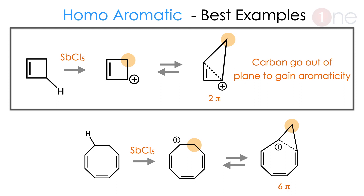The next one is the very rare type: homo-aromatic. The name itself suggests it is an established or artificially created aromaticity. In the cyclobutene system, if you use a strong acid, it pulls the hydrogen out and creates a positive charge to generate resonance, because resonance creates stability. To create the resonance, one carbon goes out of the plane to gain aromaticity. Since it is an artificial ring current, it is called a homo-aromatic system. The very common one is the cyclobutene system and the uncommon one is the cyclooctatetraene system.